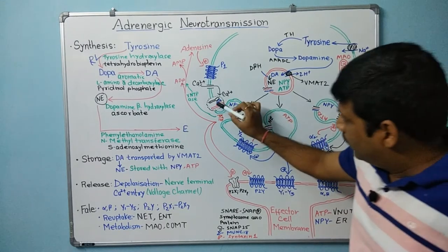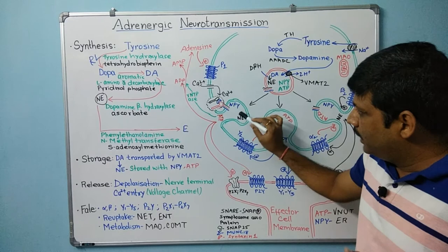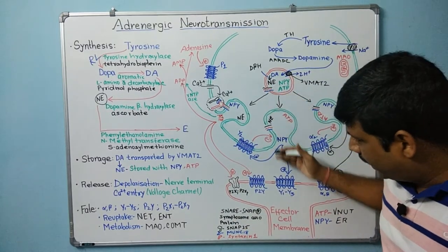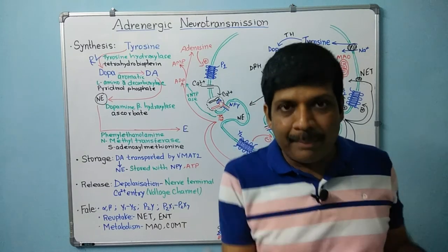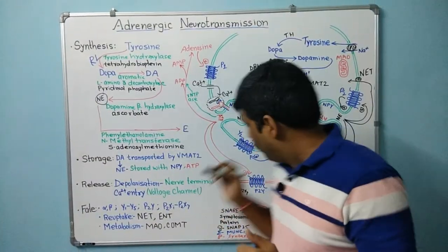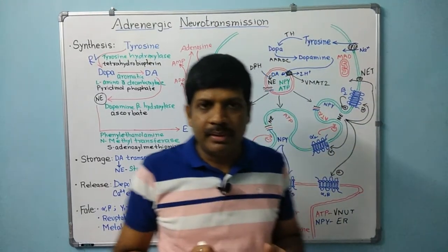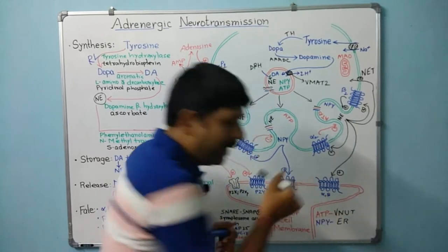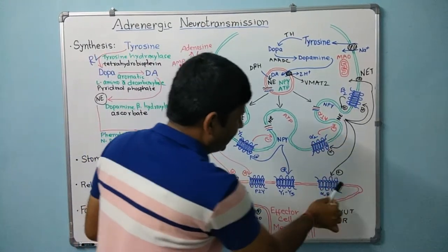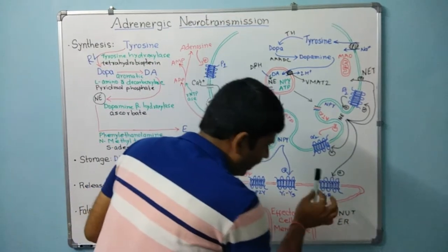This exocytosis mechanism is the same for all co-transmitters. When the vesicle binds and forms a complex, there is exocytosis and release of ATP, NPY, or norepinephrine based upon the location. After release, the fate of the neurotransmitter: first, norepinephrine may go and bind to specific post-junctional adrenergic receptors — alpha and beta receptors — which are GPCR receptors with a seven transmembrane helical structure.